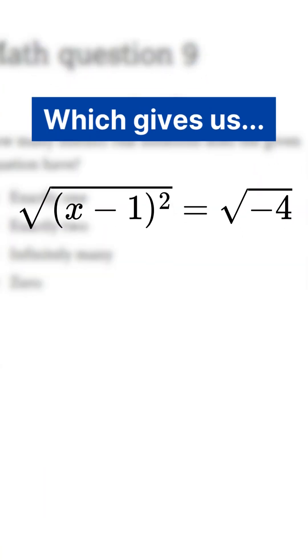which gives us the square root of the quantity (x - 1)² is equal to square root of -4. So that means x - 1 is equal to plus or minus the square root of -4.